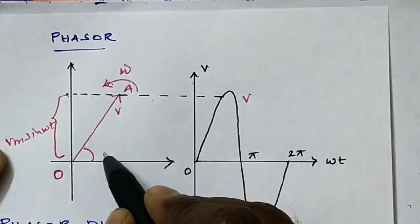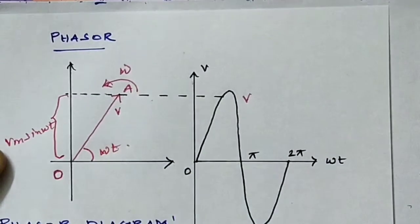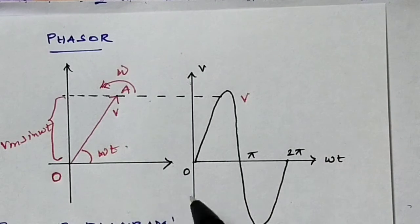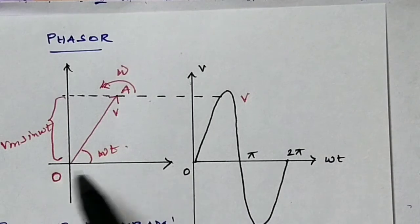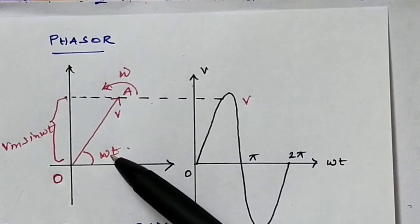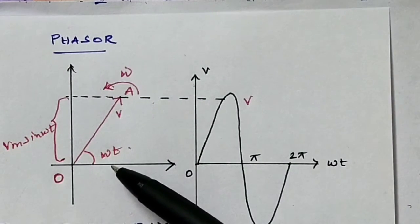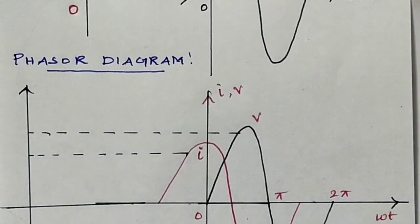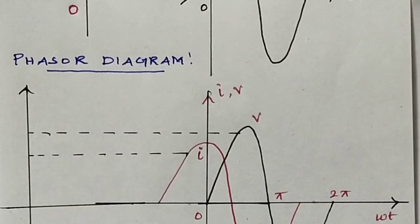Now moving to the phasor diagram. The phasor diagram shows the phase of the alternating current and the relation between the current and voltage.